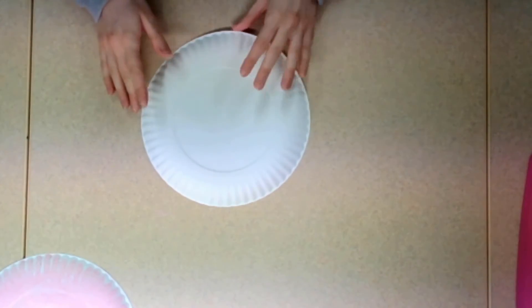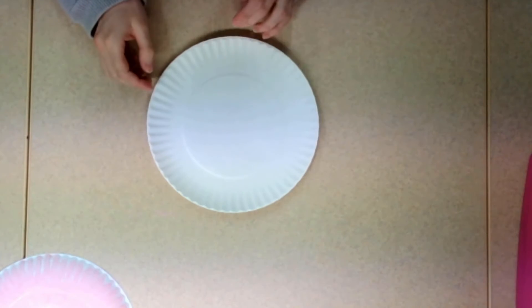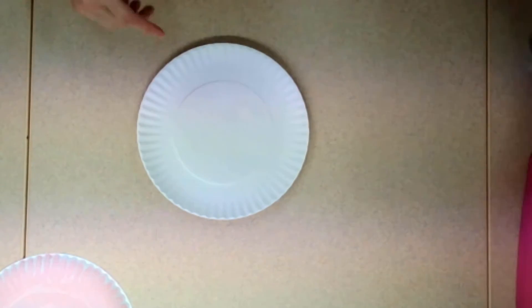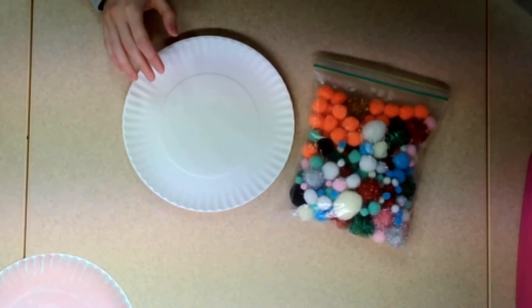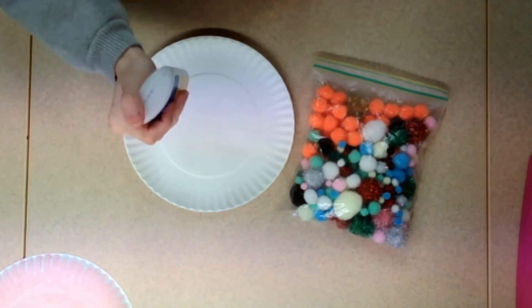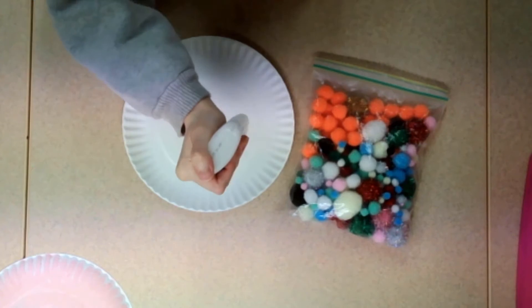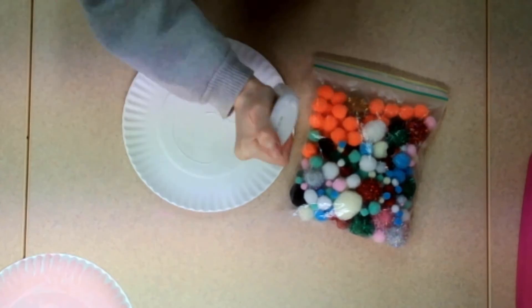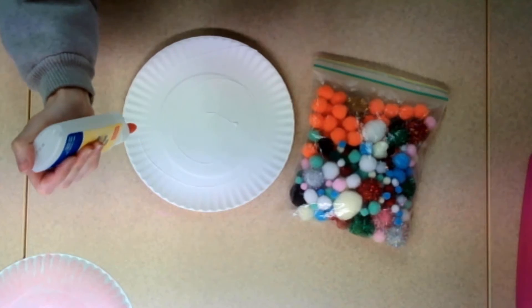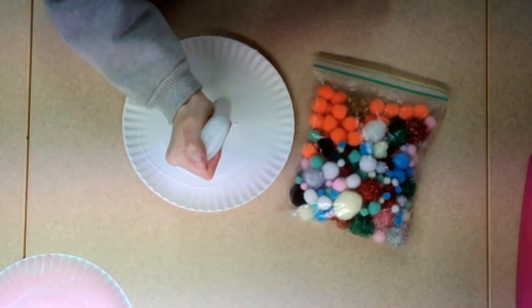Now, decorate your other paper plate. Use whatever you'd like: pom-poms, glitter, buttons, beads, stickers. It's up to you. You may want to trim your plate so that it is a smaller shape. This way your snail will rock better later. But of course, that's up to you as well.